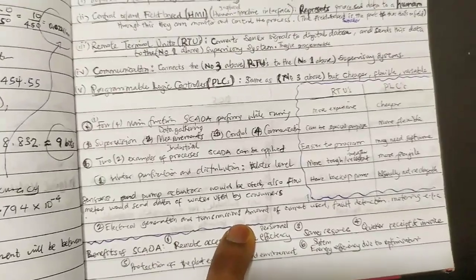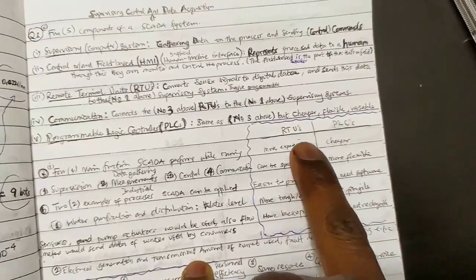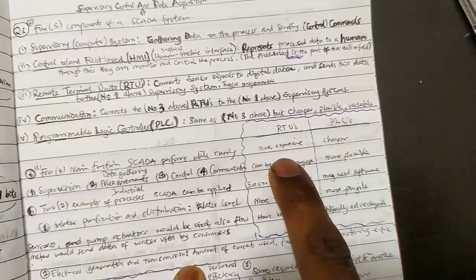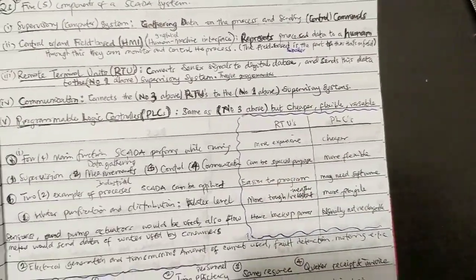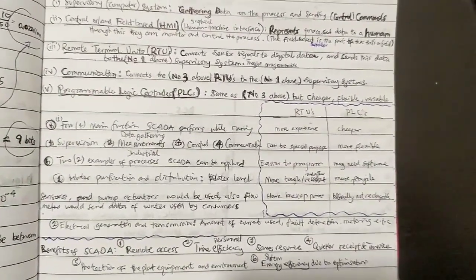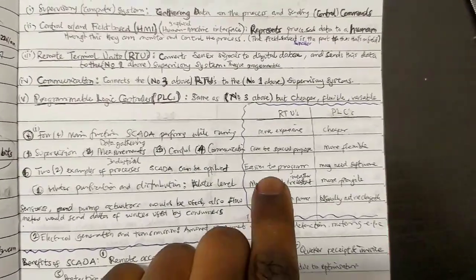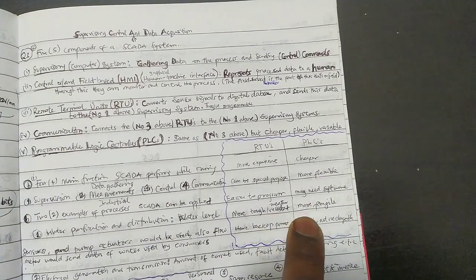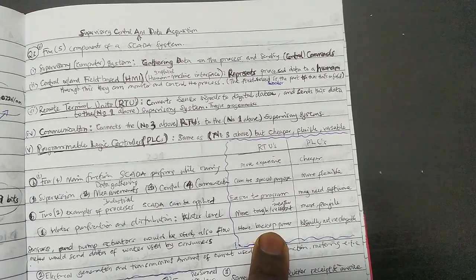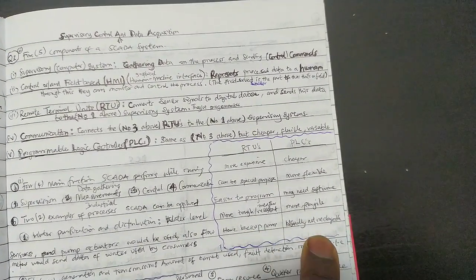Difference between RTUs and PLCs: this is more expensive, that is cheaper. This is easier to program, more tough and weather resistant. This is more fragile. This has backup power usually and PLCs usually are not rechargeable. You can pause and screenshot.